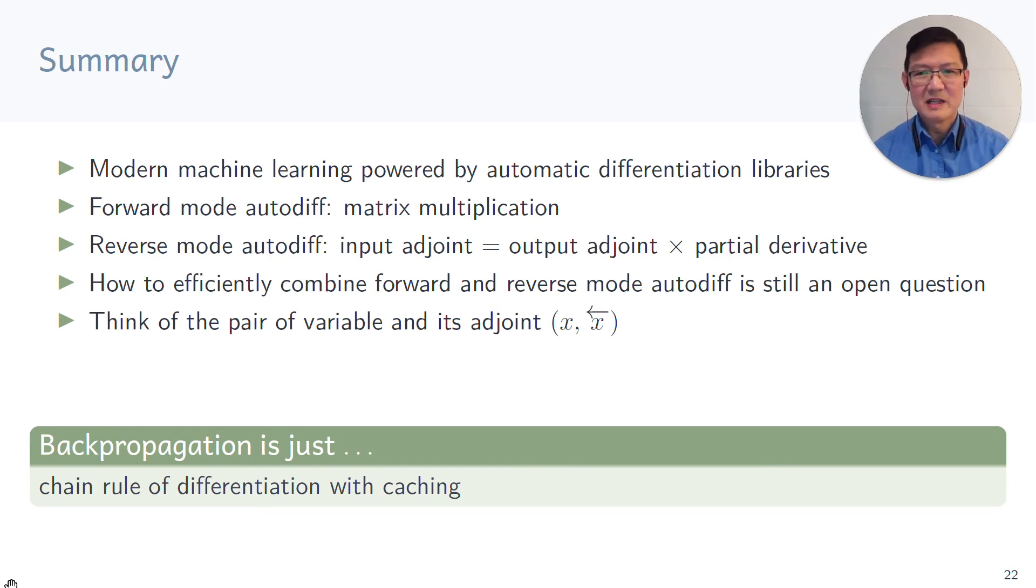In summary, modern machine learning is powered by automatic differentiation libraries. For forward mode, you can think of dual numbers in terms of matrix multiplication. For reverse mode, you need to observe that the input adjoint is the output adjoint multiplied by the partial derivative. How to efficiently combine forward and reverse mode automatic differentiation to compute the gradient of any given function is still an open question. And if there's anything I want you to take away from this lecture, I'd like you to remember to think of a variable and its adjoint when thinking about computing gradients. Backpropagation is just the chain rule of differentiation with caching.